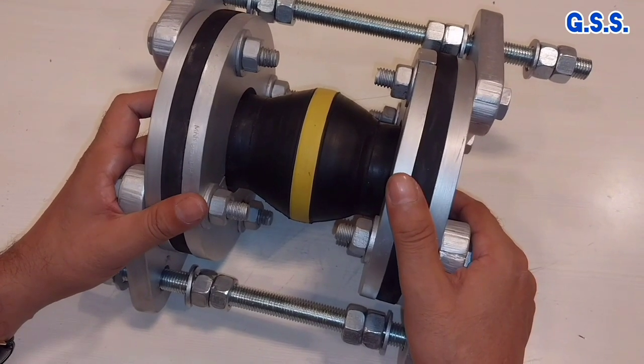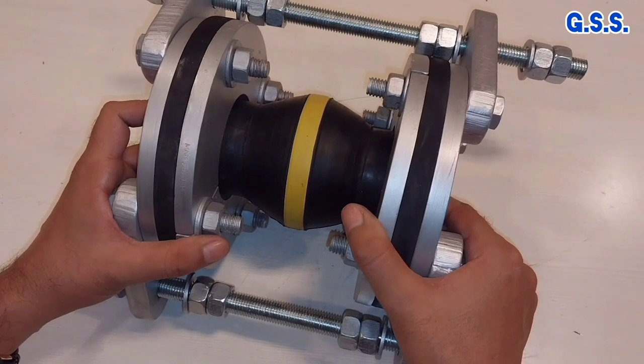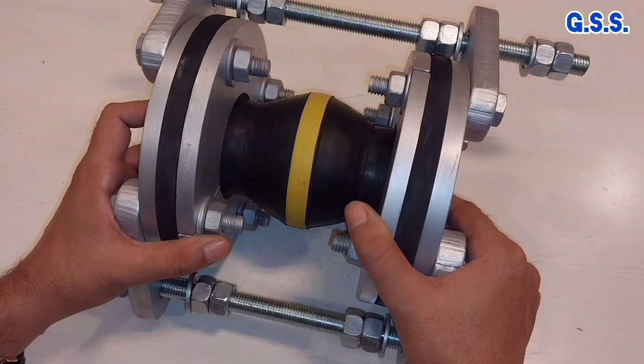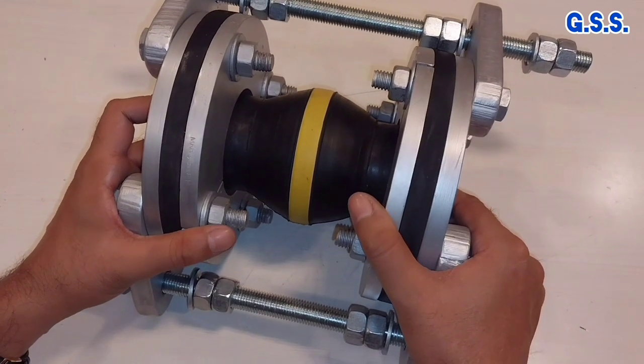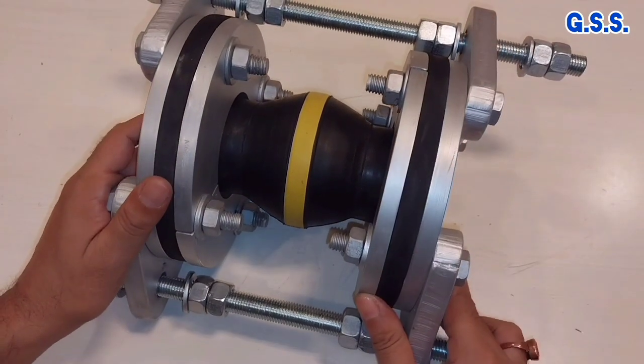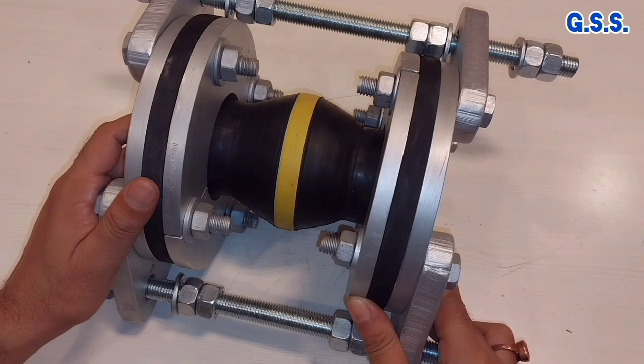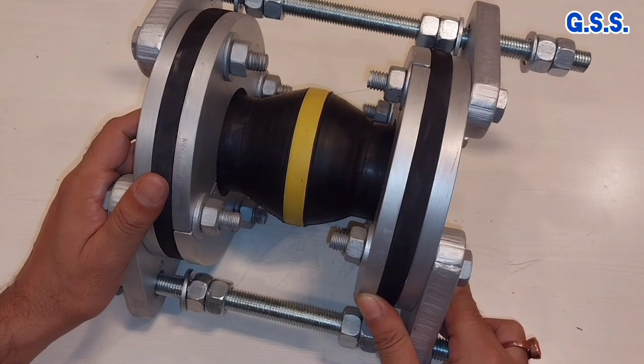Actually, technical requirements of this type of rubber bellow like axial compression, axial extension, lateral deflection, axial spring rate, lateral spring rate, and this face-to-face dimension, everything has been covered in FSA standard. FSA means Fluid Sealing Association.